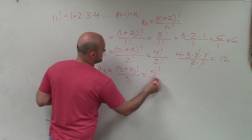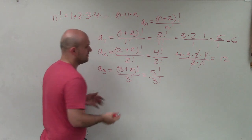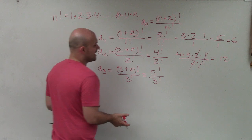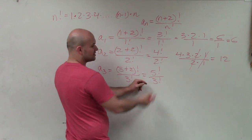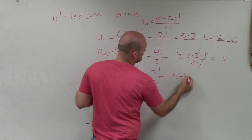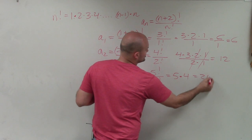3 plus 2 factorial over 3 factorial. Well, that becomes 5 factorial over 3 factorial. Hopefully you guys can see from now I know that the 3 factorials are going to divide out. Again, just leave me with 5 times 4, which is 20. So I hope I didn't do that too early for you.